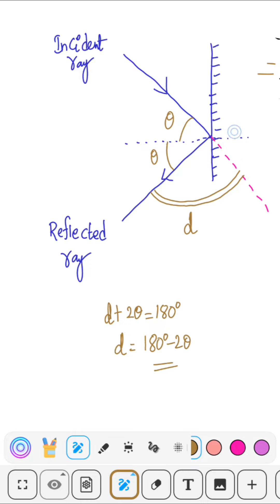Now, angle of deviation is the angle made by incident ray when it is extended in other direction with the reflected ray. This is the angle of deviation.